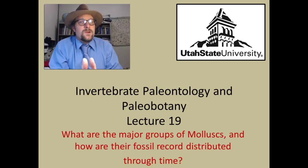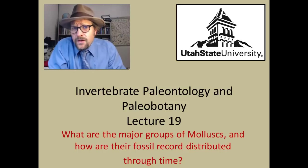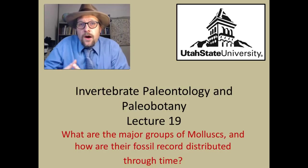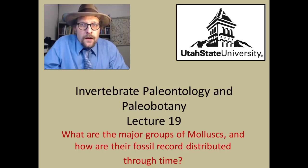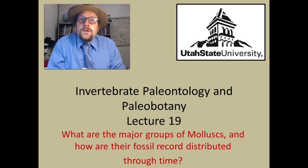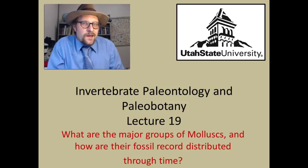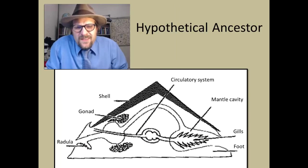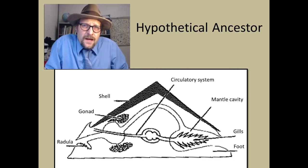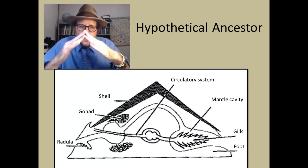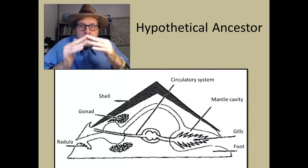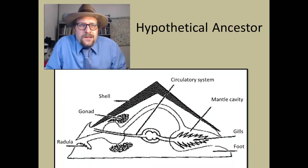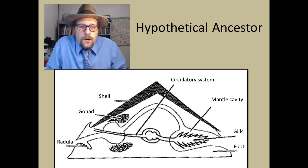It is a really big group of animals to cover in a single lecture, but we can simplify the group when we look at the archetype of Mollusca, or the shared features that all of these groups have in common, or at least ancestrally have in common. It has a cap-like shell composed of calcium carbonate on top, which is secreted by a layer of tissue below, called a mantle.